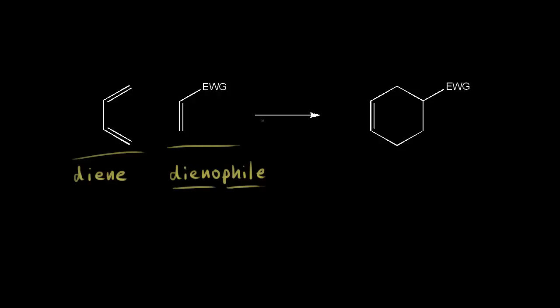The dienophile usually has at least one electron withdrawing group, which withdraws electron density from its double bond, so the dienophile is relatively electron poor. The diene, on the other hand, is relatively electron rich — we have four pi electrons. So you can think about the electrons flowing from the diene to the dienophile.